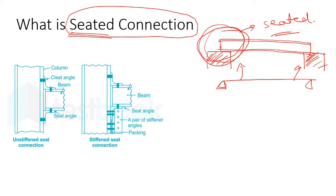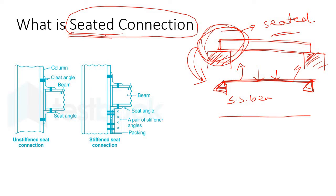Now the question is whether it is a moment connection or a shear connection. If we draw the line diagram of this seated connected beam, it looks like a simply supported beam. In any simply supported beam, the bending moment diagram shows that at the support the bending moment is simply zero. So it is a shear connection — it is not a moment connection.